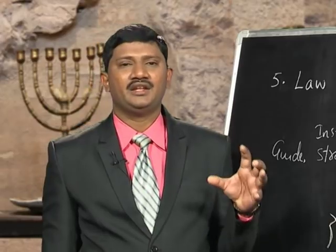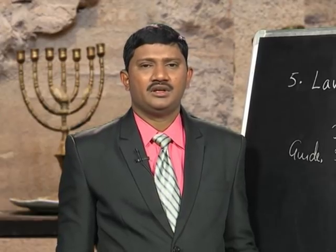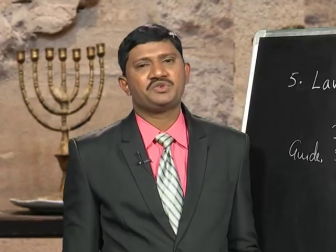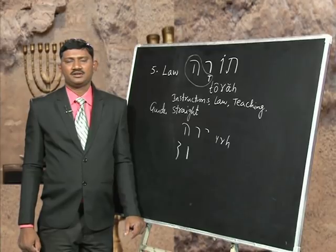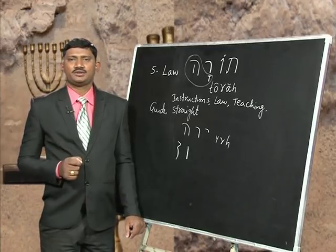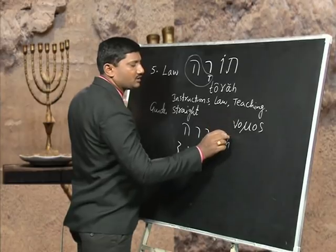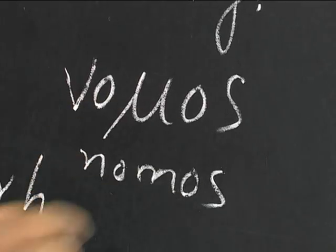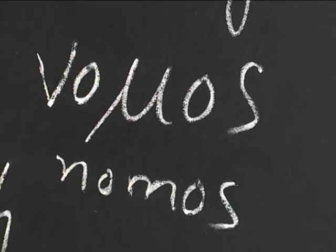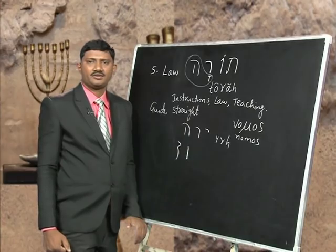So the word 'law' is not only used in the Old Testament — the same sense we see in the New Testament also. The Greek word for the word 'law' is nomos — N, O, M, O, S. So nomos means law, or instructions, or guidance. That is the Greek equivalent of the Hebrew word Torah.